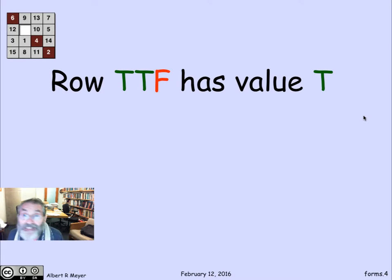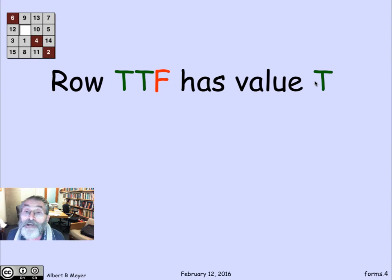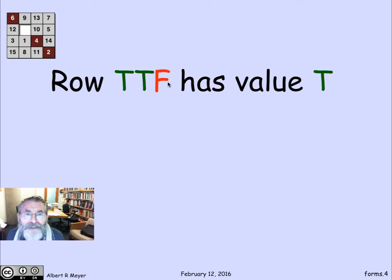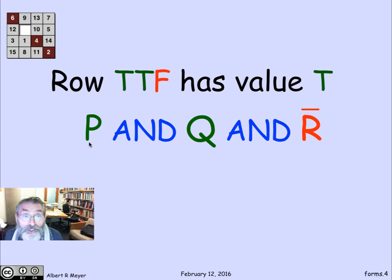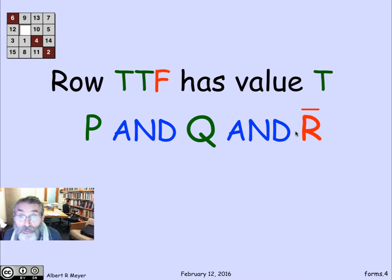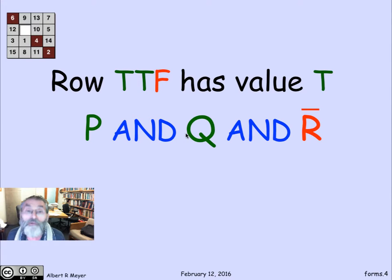Now let's look at ρ(T, T, F) — that's the ρ with p is true, q is true, r is false. It's got more trues than falses, so the value of the function at that ρ is T. How can I describe this ρ(T, T, F)? It's the ρ in which p is true and q is true and r is false — the same as saying it's the ρ where the propositional formula, the product term p AND q AND NOT r, is true, and it's the only row where this product takes the value 1.